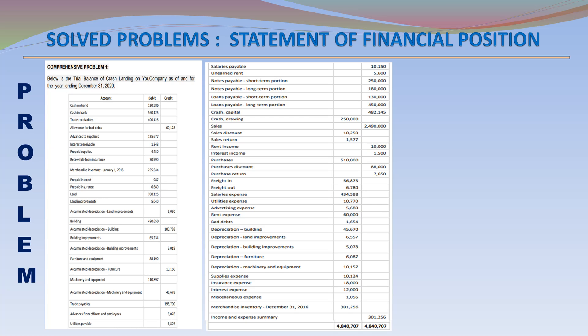Sales Discount 10,250 (Debit); Sales Return 1,577 (Debit); Rent Income 10,000 (Credit); Interest Income 1,500 (Credit); Purchases 510,000 (Credit); Purchase Discount 88,000 (Credit); Purchase Return 76,50 (Credit); Freight In 56,875 (Debit); Freight Out 67,80 (Debit); Salaries Expense 434,588 (Debit); Utility Expense 10,770 (Debit); Advertising Expense 5,680 (Debit); Rent Expense 60,000 (Debit); Bad Debts 1,654 (Debit); Depreciation Buildings 46,70 (Debit); Depreciation Land Improvements 6,557 (Debit); Depreciation Building Improvements 5,078 (Debit).